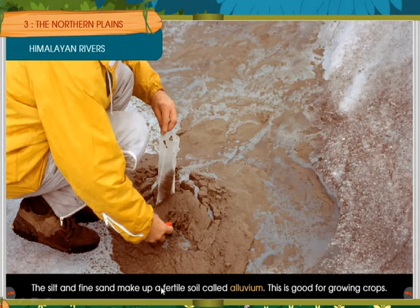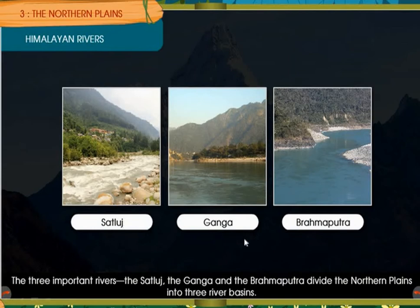The three important rivers — Satluj, Ganga and Brahmaputra — divide the northern plains into three river basins.